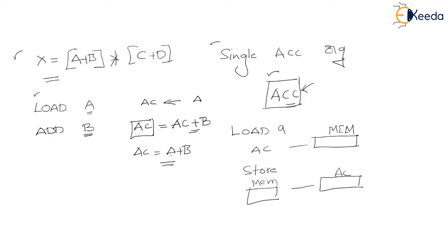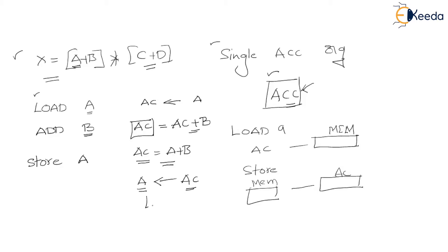Now I need to perform C + D as well, and for that we need to use the same accumulator. We need to make the accumulator free right now because it already holds A + B. If we directly perform C + D in the accumulator, the previous contents A + B will get erased. So to avoid that, we will transfer the contents of the accumulator to a memory location. I will use StoreA — the contents of the accumulator, which is A + B, will get transferred to memory location A. Now A holds A + B.